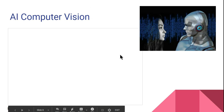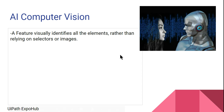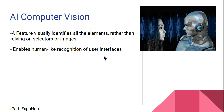AI Computer Vision is a feature that visually identifies all the elements, just like a human being — when we look at something, we understand it. It visually identifies all the elements rather than relying on selectors or images. It tries to visually identify like a human being. That is what AI Computer Vision is all about — it enables human-like recognition of user interfaces.